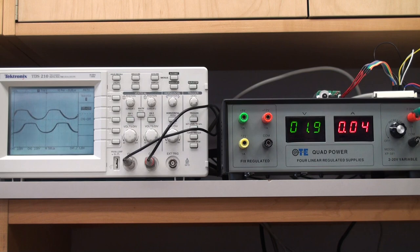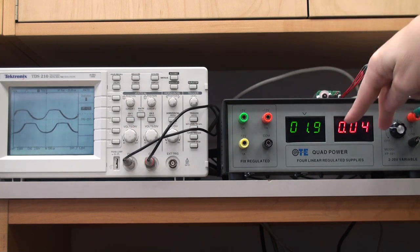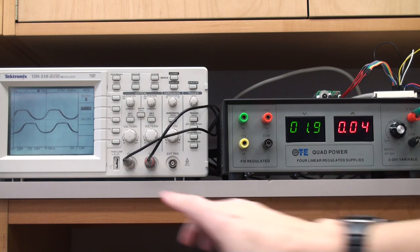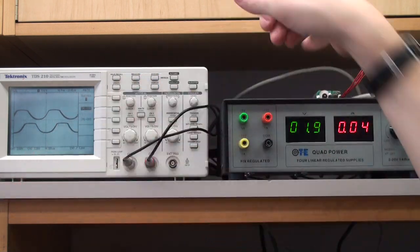So here we have a permanent magnet DC motor with a shaft encoder hooked up to a DC supply. On the oscilloscope we can see the outputs of the two channels of the shaft encoder.